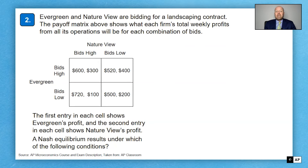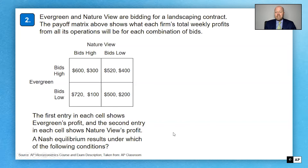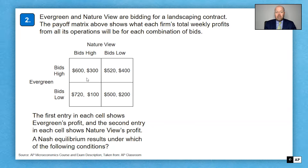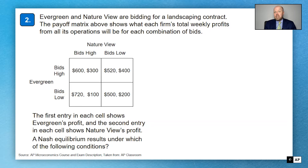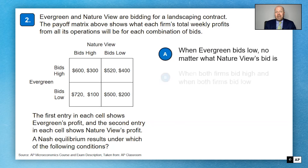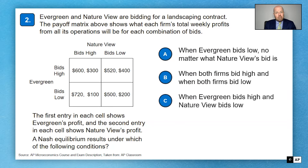Question number two: Evergreen and NatureView are bidding for a landscaping contract. The payoff matrix shows each firm's total weekly profits for each combination of bids. The first entry in each cell shows Evergreen's profit, and the second entry shows NatureView's profit.